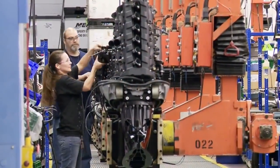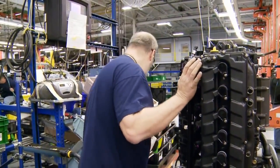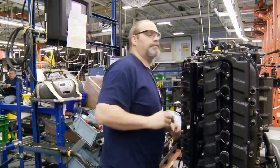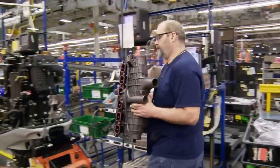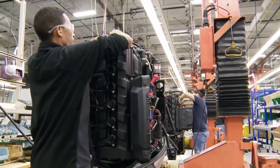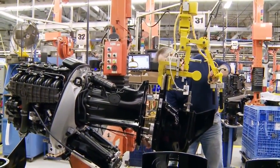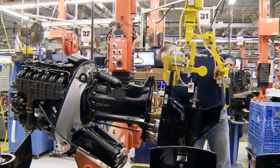Next, a slew of Verado exclusives are put in place, including digital throttle and shift, a supercharger, and the engine oil cooler. Here, the charge air cooler is installed, and the next four stations complete the electrical components. And at last, the gear case assembly is attached. The engine is topped off with oil and is ready to run.